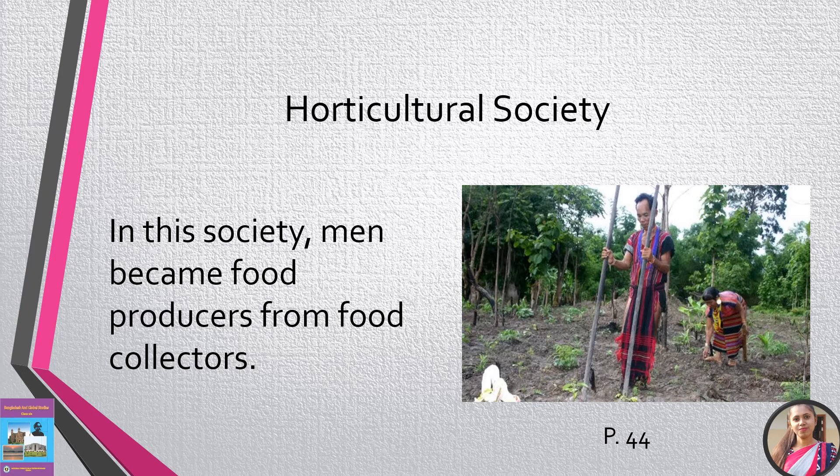Horticultural society: In this society, men became food producers from food collectors. Women started cultivation while men went for hunting. Women made holes with a long stick or animal horn on the ground around their dwelling places, putting seeds in the holes to produce crops and fruits. But they did not grow more crops than they needed.